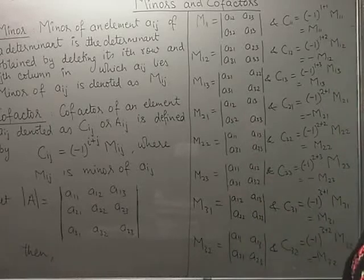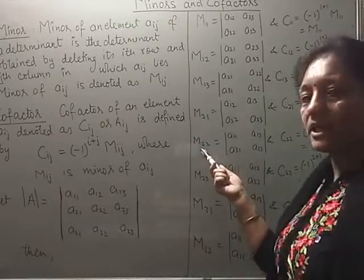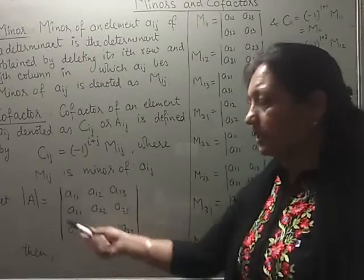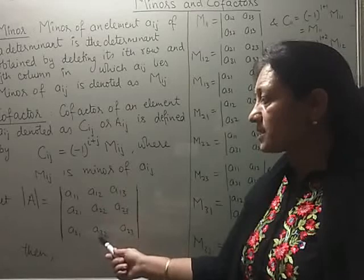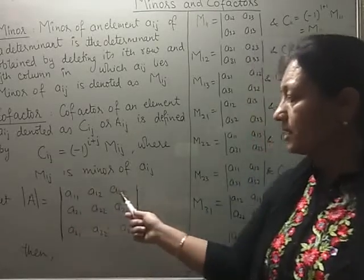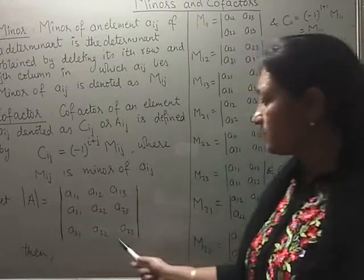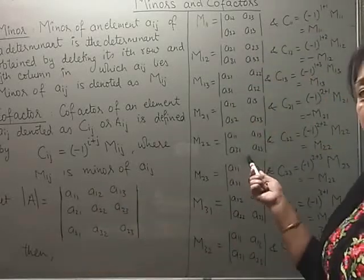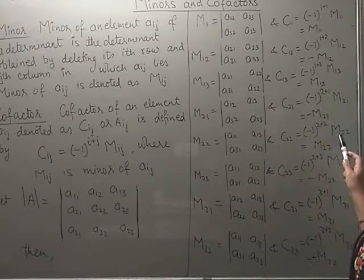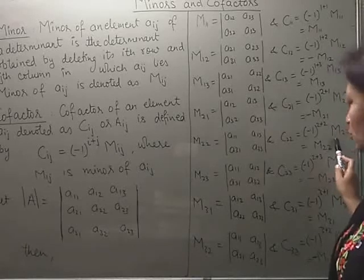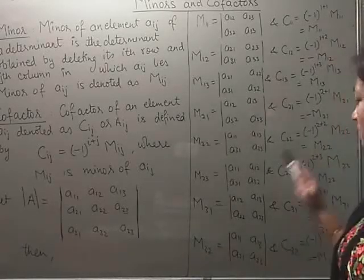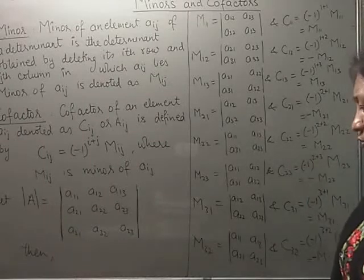Similarly, for M22, we delete the second row and second column. The four elements left in the minor determinant are A11, A13, A31, A33. Its cofactor C22 equals minus 1 to the power 2 plus 2 times M22. Since minus 1 to the power 4 is plus 1, C22 equals M22.